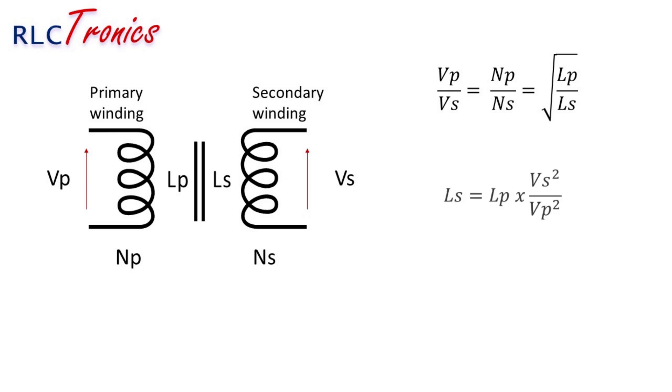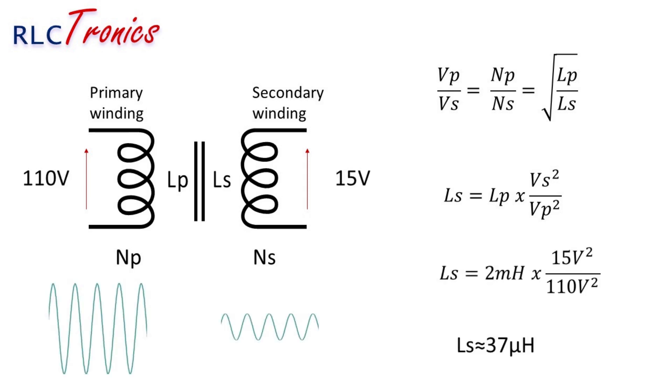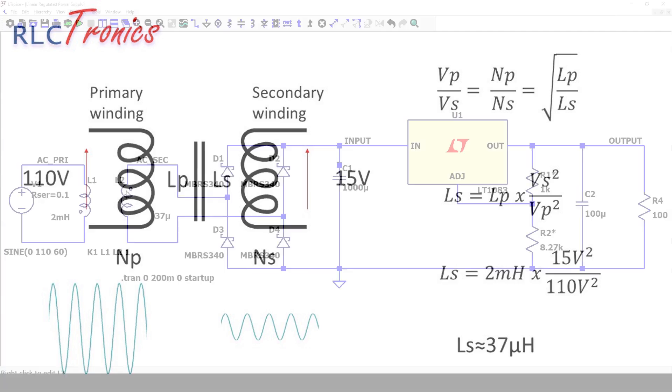By choosing a value of the input inductance, we can calculate the output inductance in accordance with the desired transformation ratio or simply with the output voltage. In this case, let's take 2 millihenry for the primary winding and 15 volts for the output voltage at the secondary winding. The inductance of the secondary winding in this case must be around 37 microhenry.